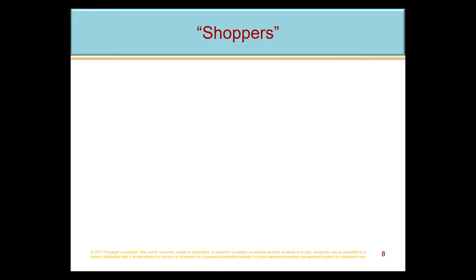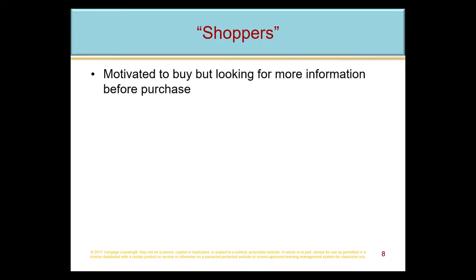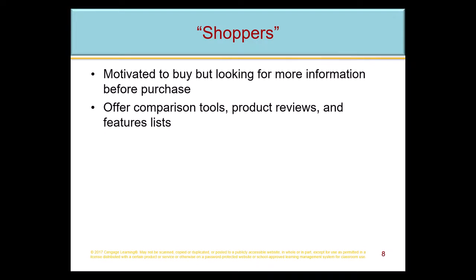Shoppers are another category — kind of in between browsers and buyers. They're motivated and looking for more information; they want to make a purchase but not quite yet. What's important to these people are comparison tools — looking at product one versus product two versus product three. Side-by-side comparison is a great tool. To support this, make sure all your inventory has adequate, consistent attributes so you can display items side-by-side for easy comparison. Product reviews are also great — people like to see what others have said.